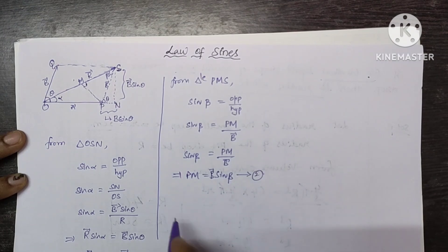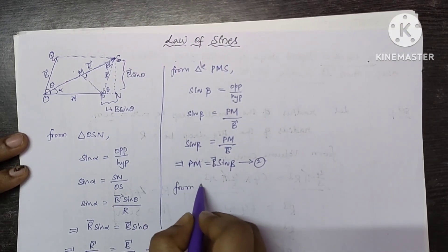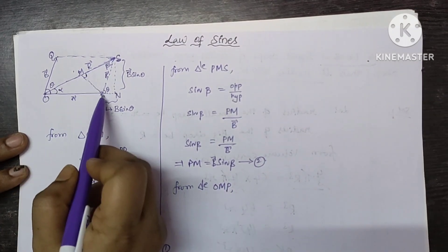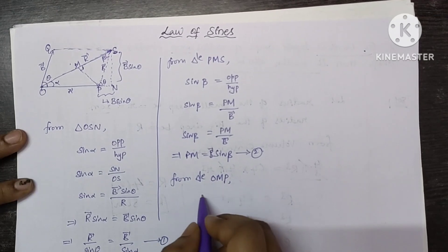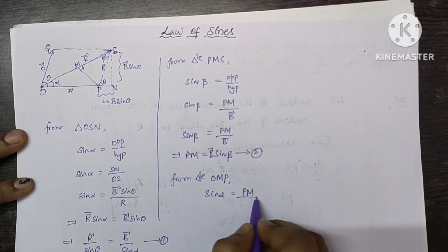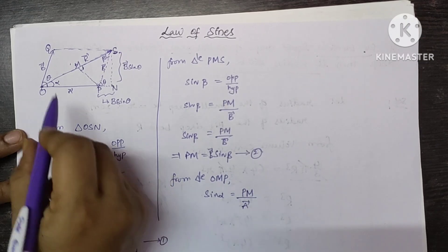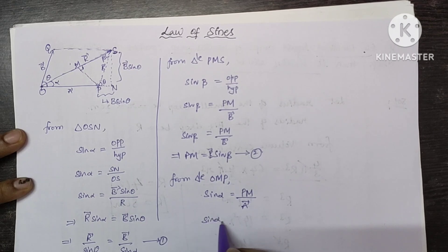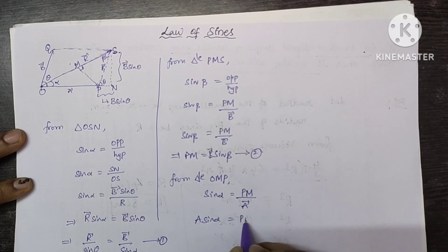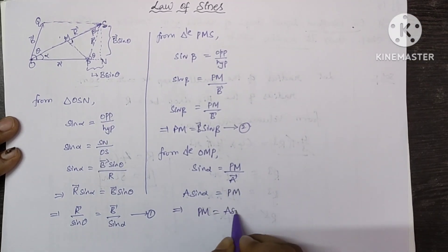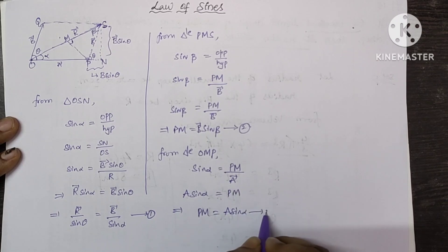From triangle OMP — look at this OMP — sin α equals opposite side Pm over hypotenuse A. So A·sin α equals Pm, that implies Pm equals A·sin α. Let this be equation number 3.